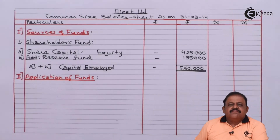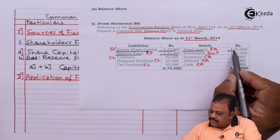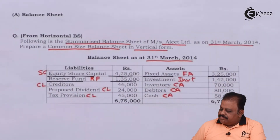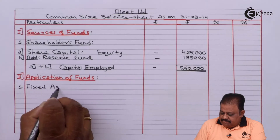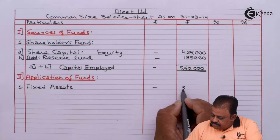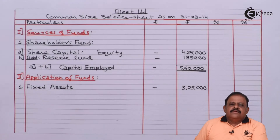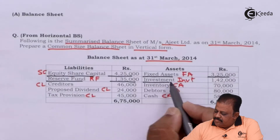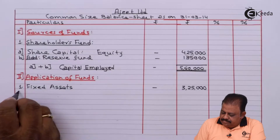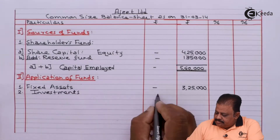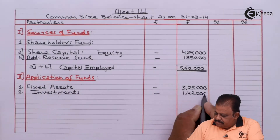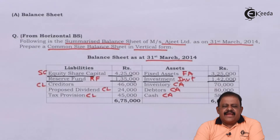In application of funds, the first item is fixed assets: 3,25,000. Next we have long-term investments of 1,42,000. Next we have working capital, for which we will first take current assets.